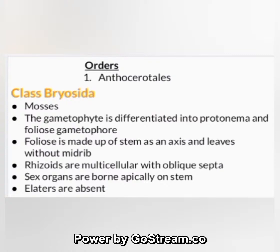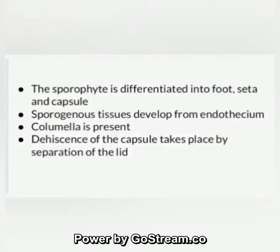Rhizoids are multicellular with oblique septa. Sex organs are borne apically on the stem. Elaters are absent. The sporophyte is differentiated into foot, seta, and capsule. Sporogenous tissues develop from the endothecium. Columella is present. Dehiscence of the capsule takes place by separation of the lid.